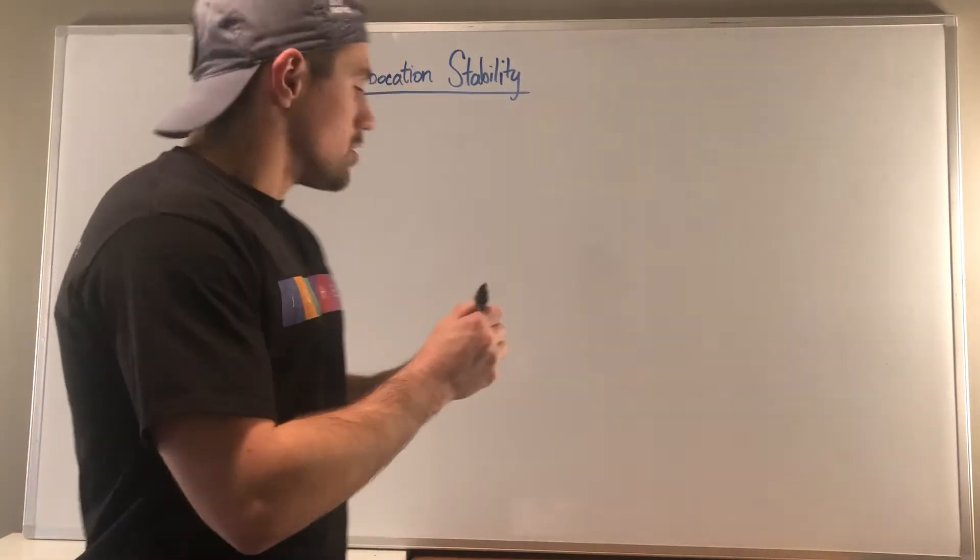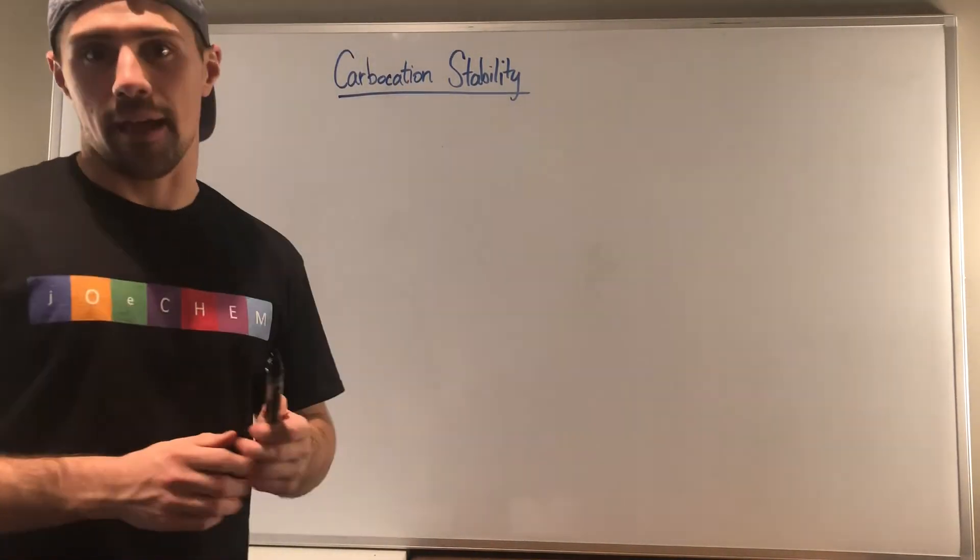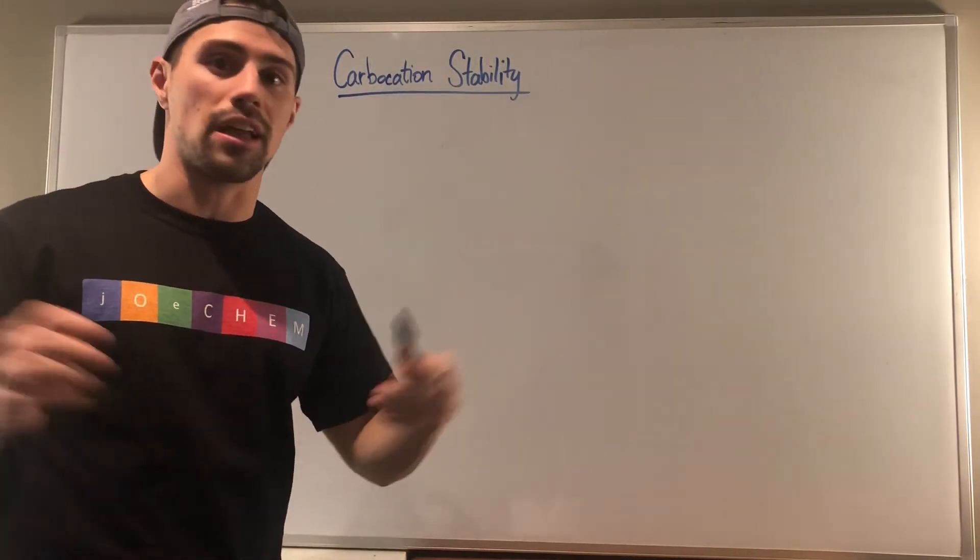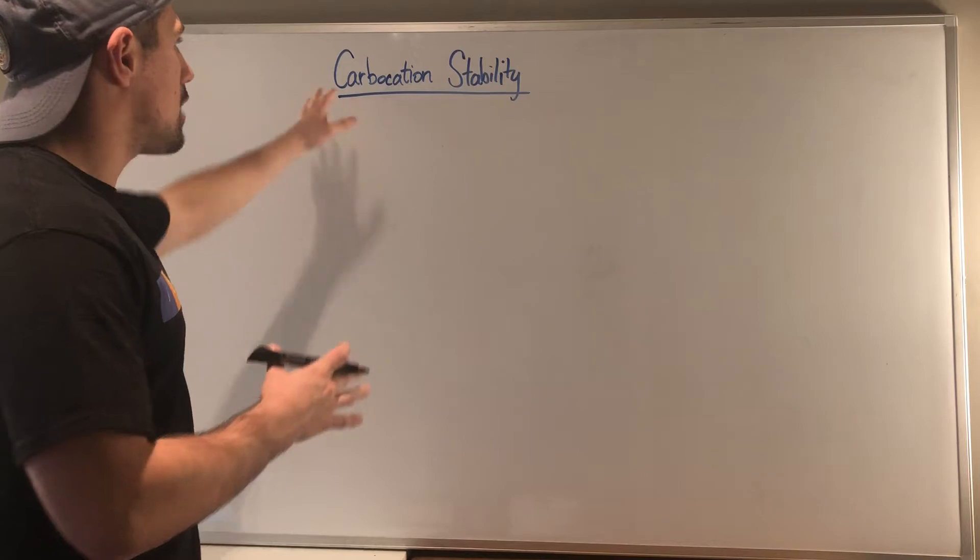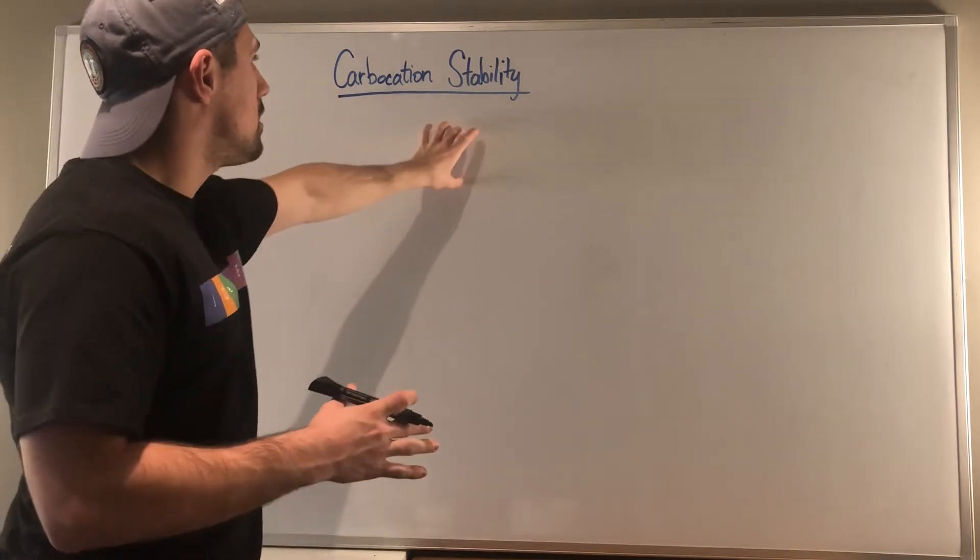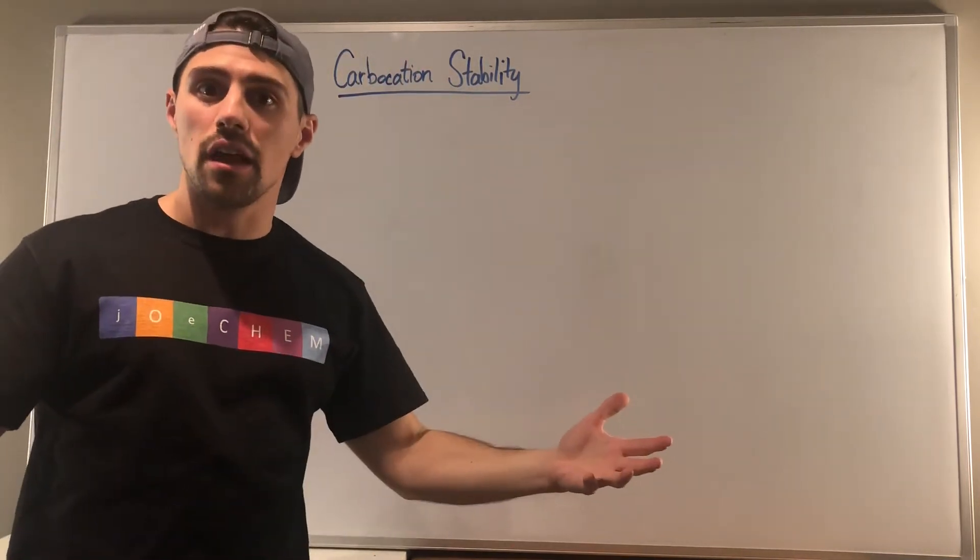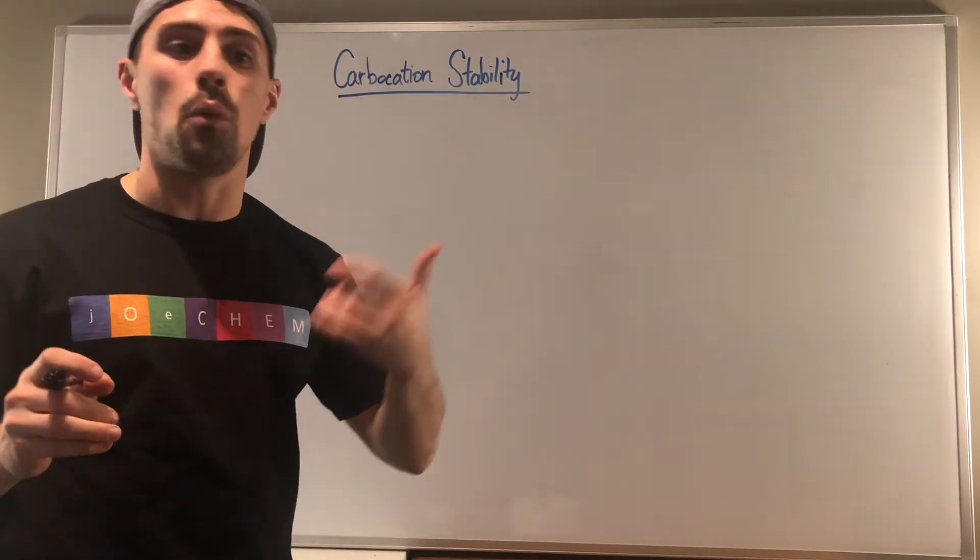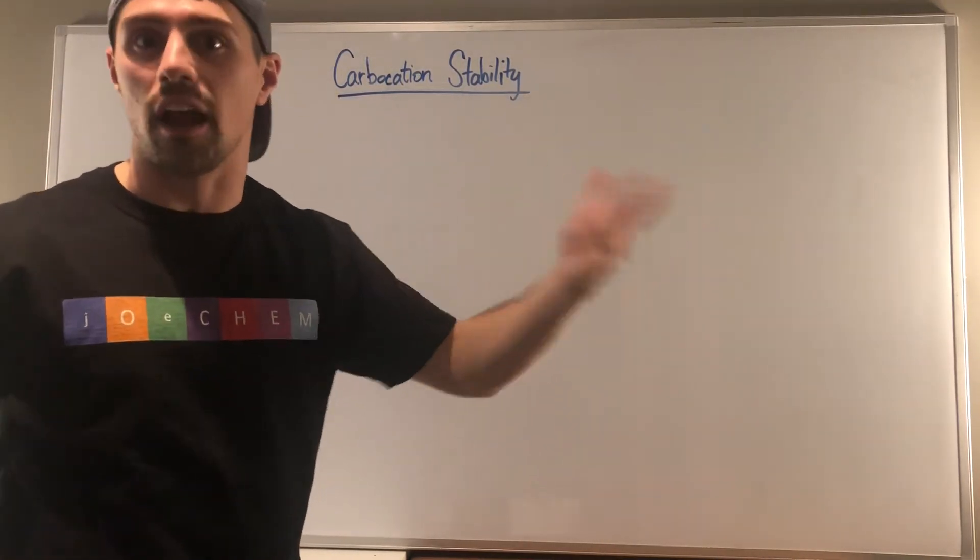Okay, so carbocations, we first ran into them when we were doing SN1, right? Throwback to solvolysis, good leaving group, all that good jazz. So I just wanted to say, here are all the carbocations in our life, most generically speaking, and why is one more stable than the other.